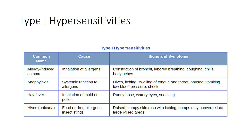To further classify type 1 hypersensitivities, a table shows how you're exposed to different types of allergens and the common names that result. If we inhale allergens, we may get allergy-induced asthma. Once the allergen is inside the bloodstream, we can get anaphylaxis. Hay fever — especially common in the south — is where we inhale something like pollen and end up with runny nose, watery eyes, and sneezing. So that's type 1 hypersensitivity, the generic allergy.